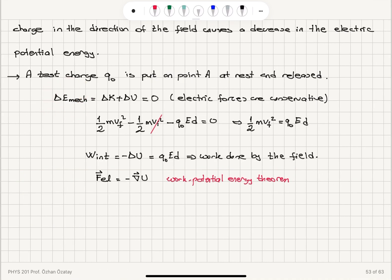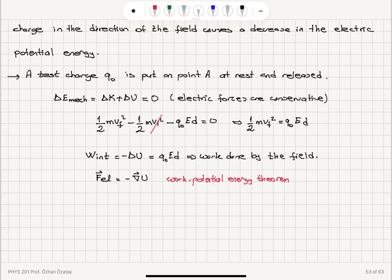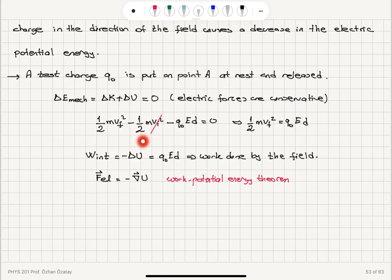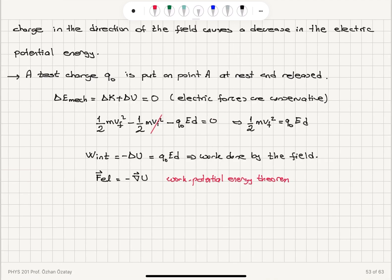The change in mechanical energy — delta K plus delta U — will be zero, because the charge is under the influence of the electric force, which is conservative. There are no non-conservative or dissipative forces, so the system energy is conserved. The change in kinetic energy is one-half mv_final squared minus one-half mv_initial squared. Since it starts at rest, the initial kinetic energy is zero. The change in potential energy is minus Q0 ED, so the kinetic energy will increase.